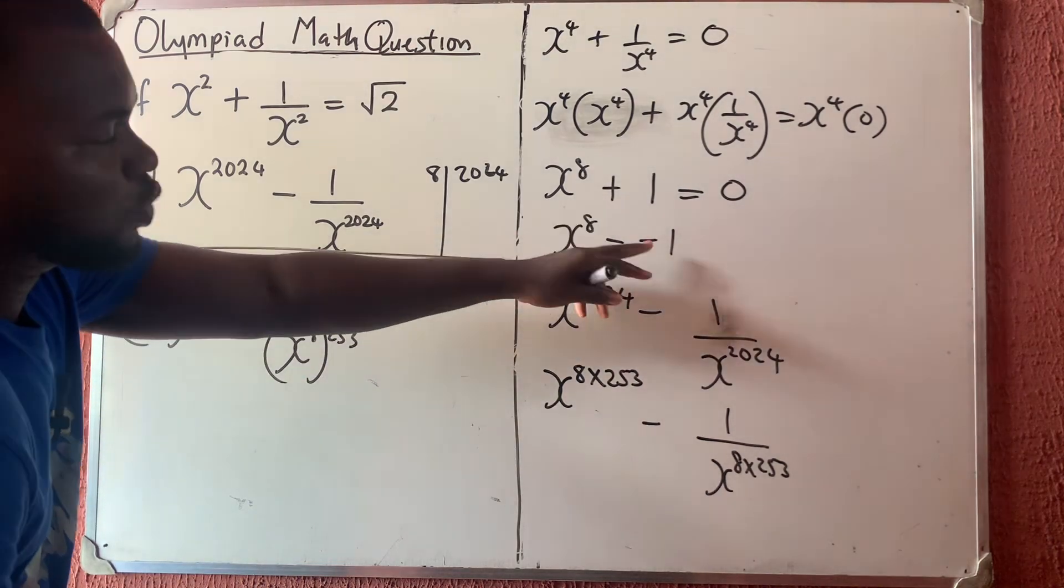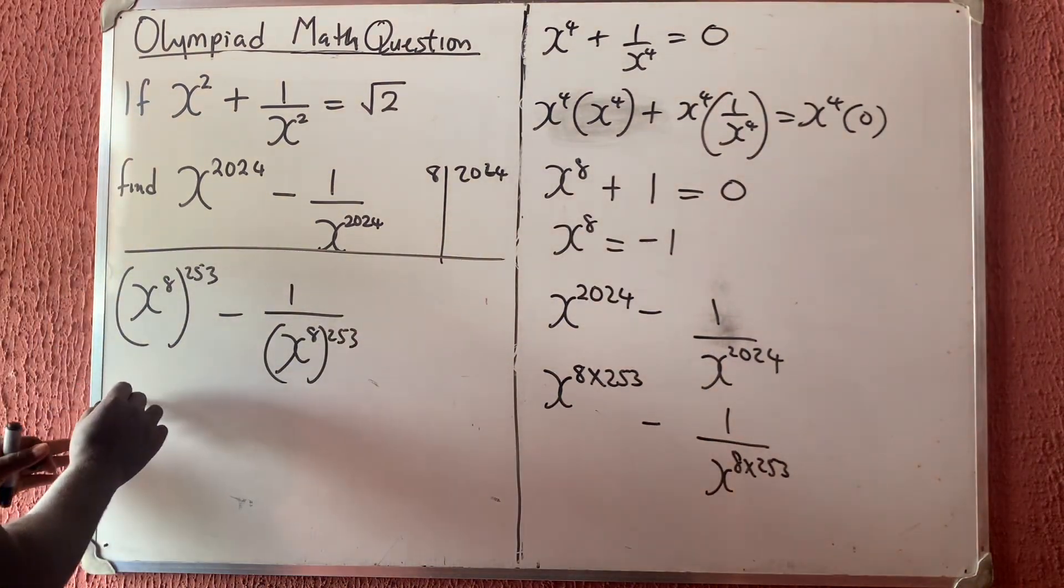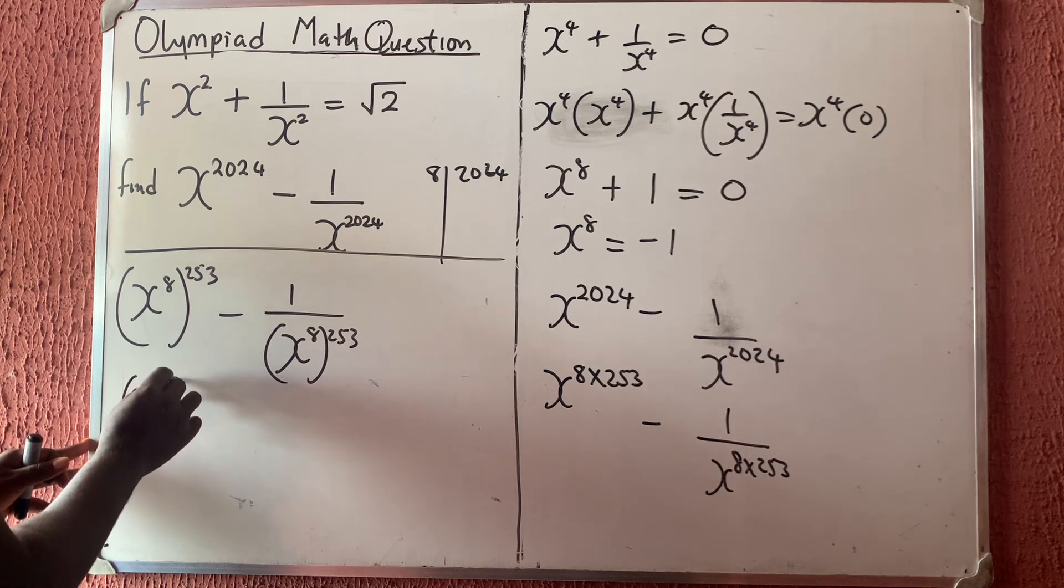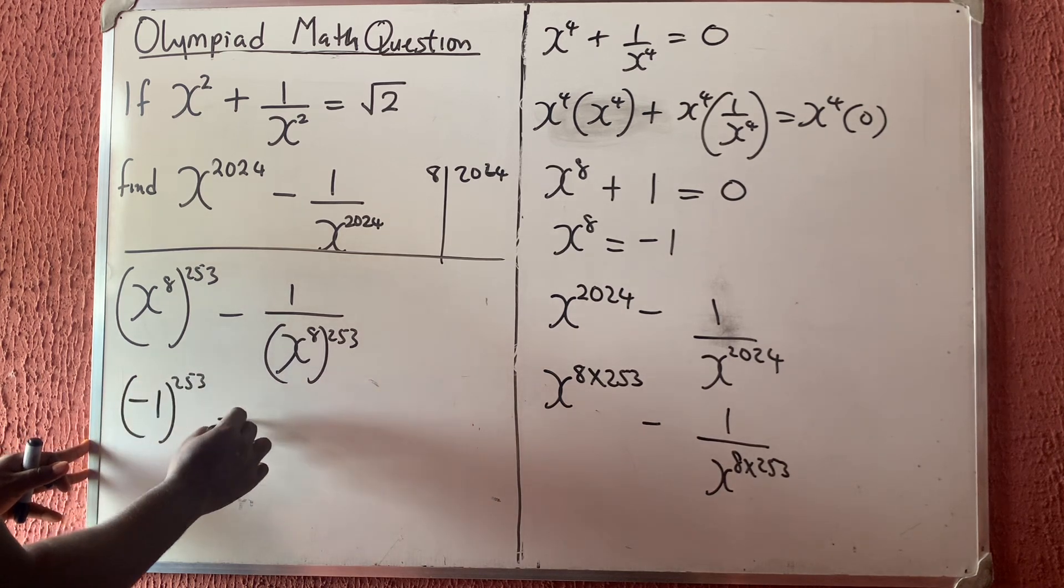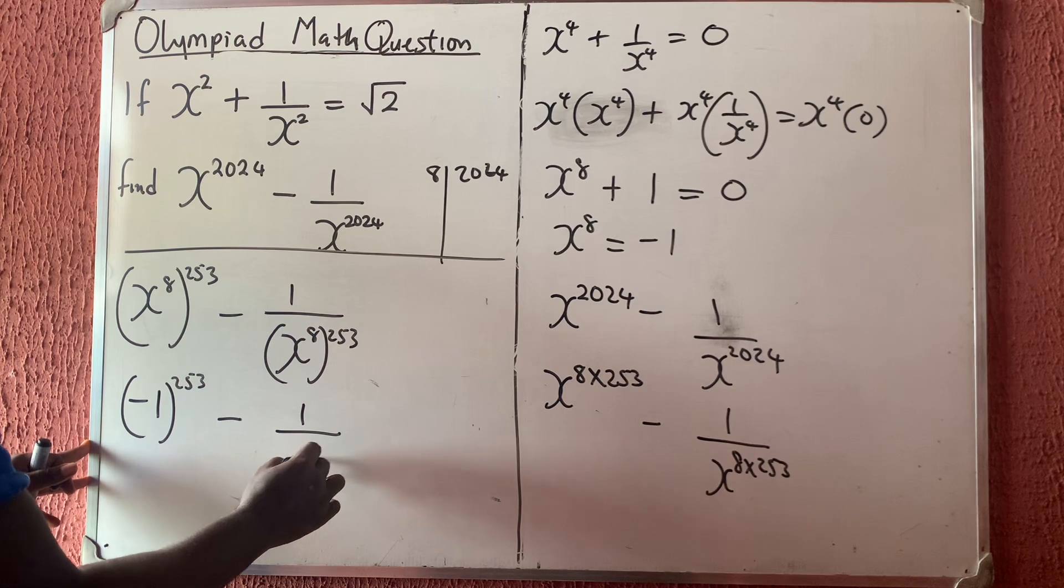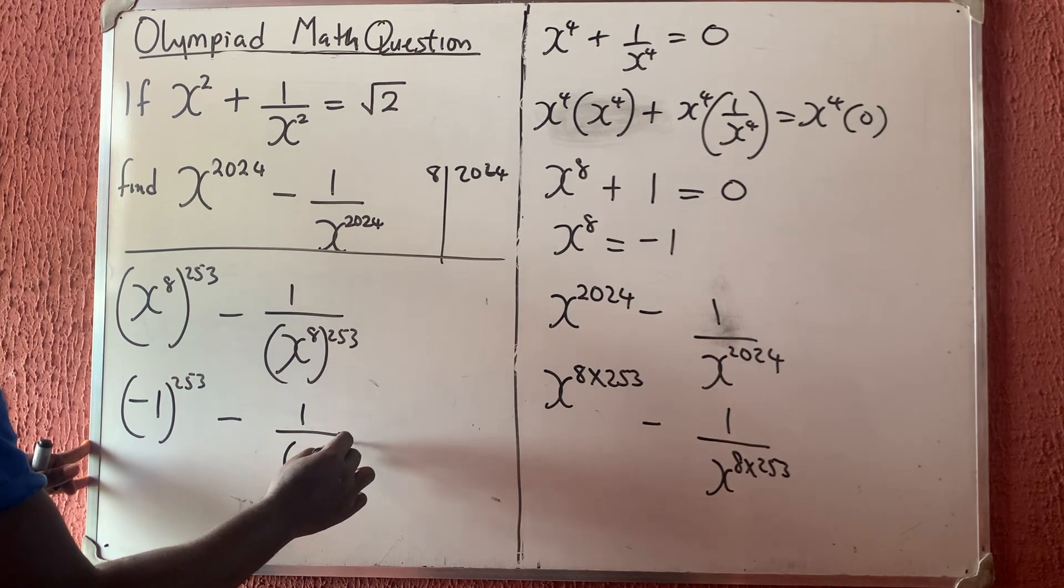Now don't forget that we have gotten that x raised to power 8 is equal to minus 1. So I'm going to have minus 1 raised to power 253, then minus 1 over minus 1 raised to power 253.